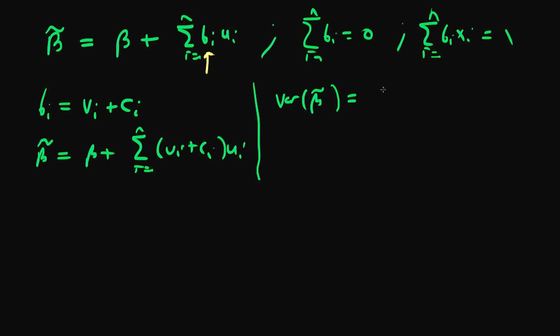Using exactly the same assumptions as for the least squares estimator, namely homoscedastic errors and no serial correlation, I find that the variance of beta tilde equals sigma squared times the sum from i equals 1 to n of vi plus ci all squared.